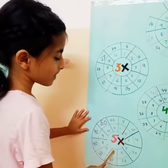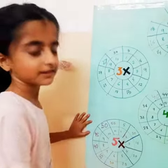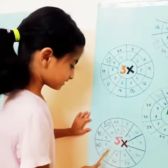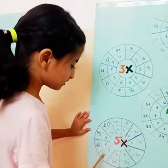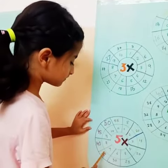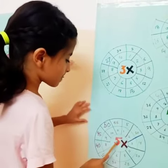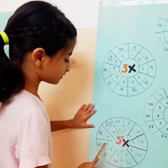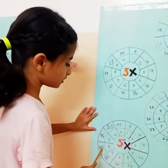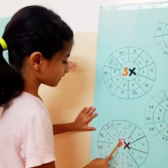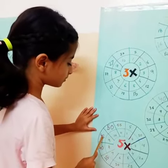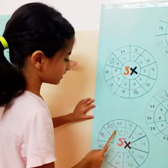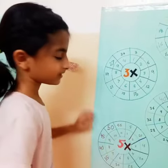5 6's are 30, 5 7's are 35, 5 8's are 40, 5 9's are 45, 5 10's are 50.